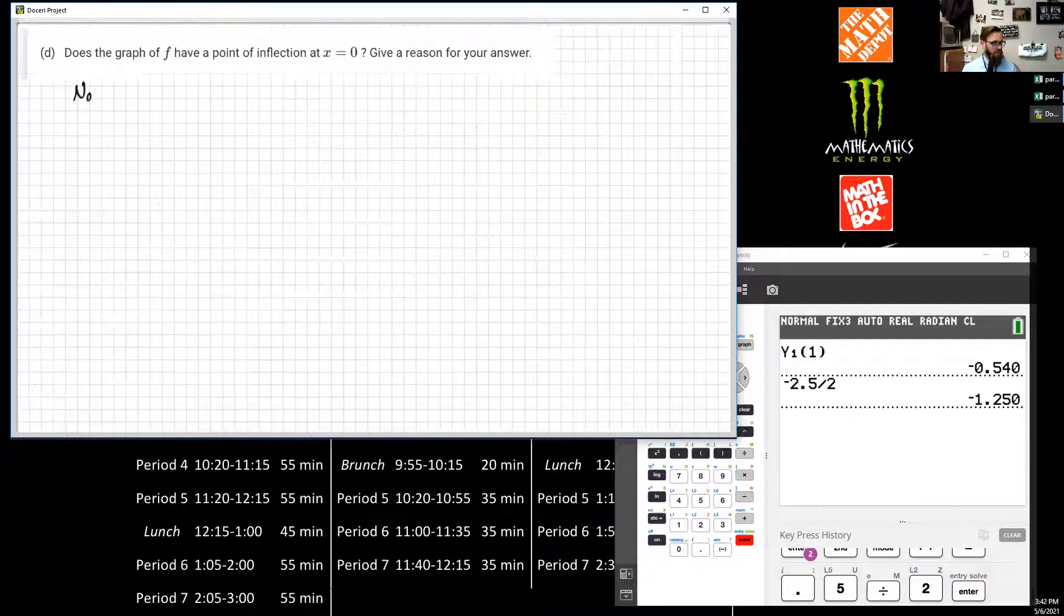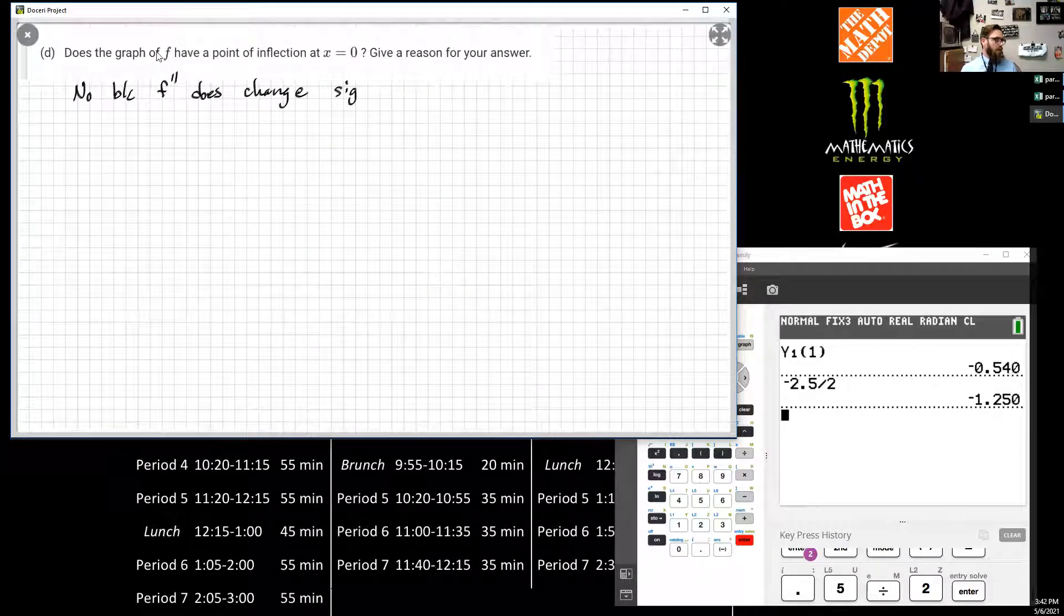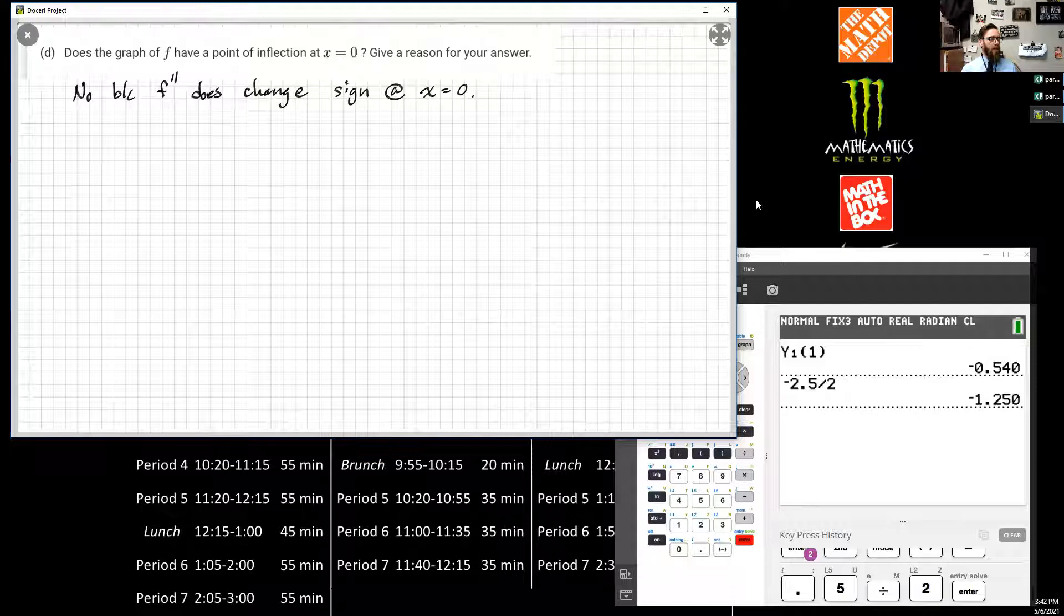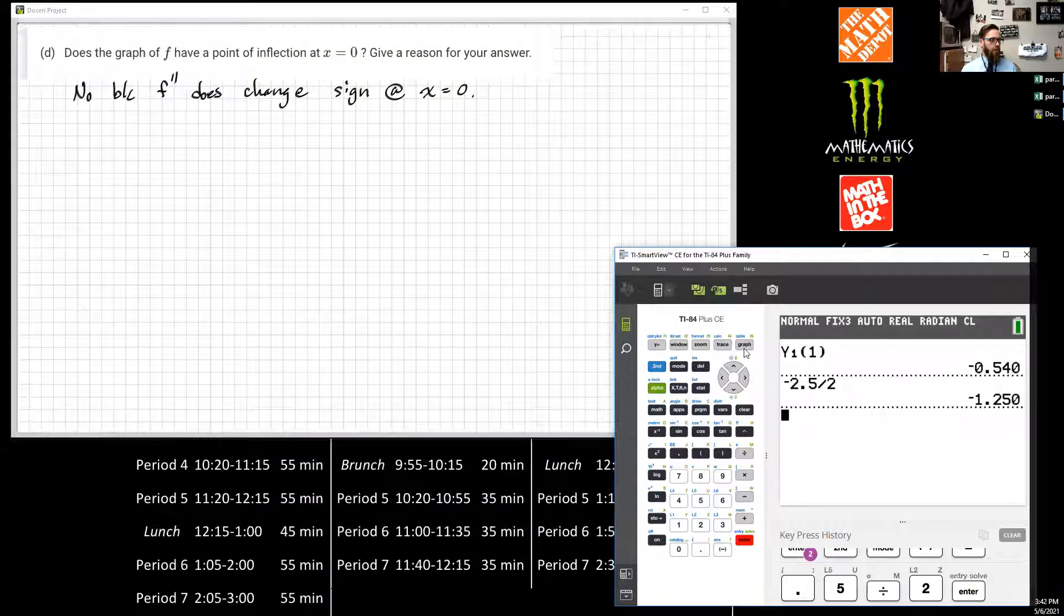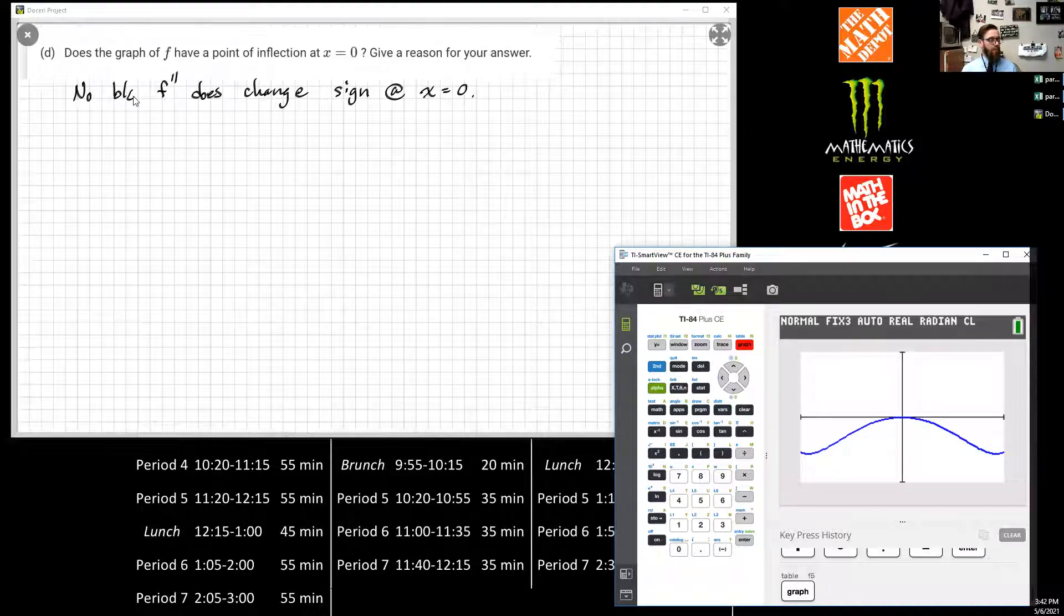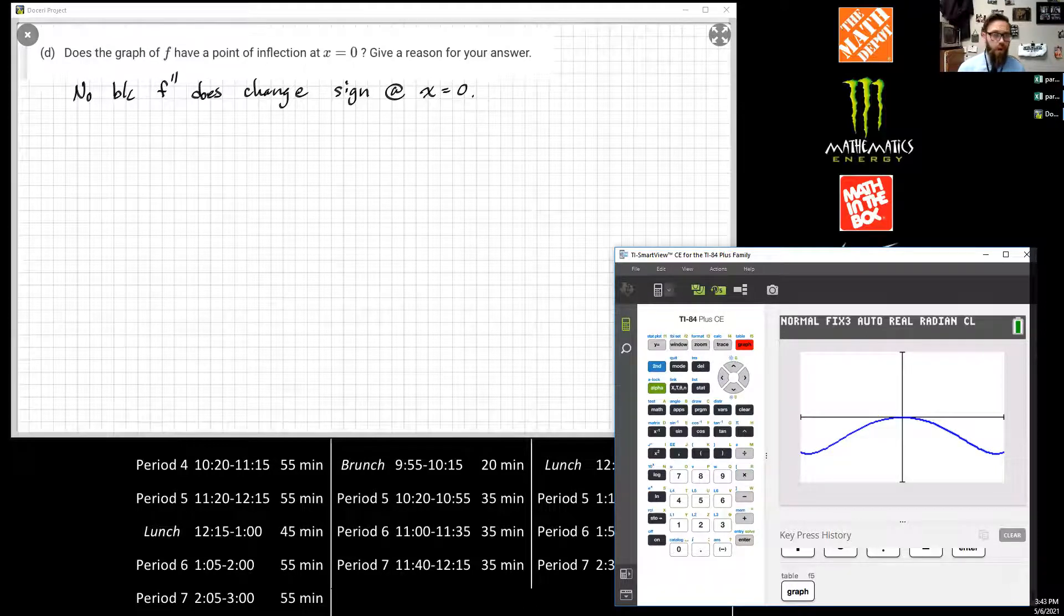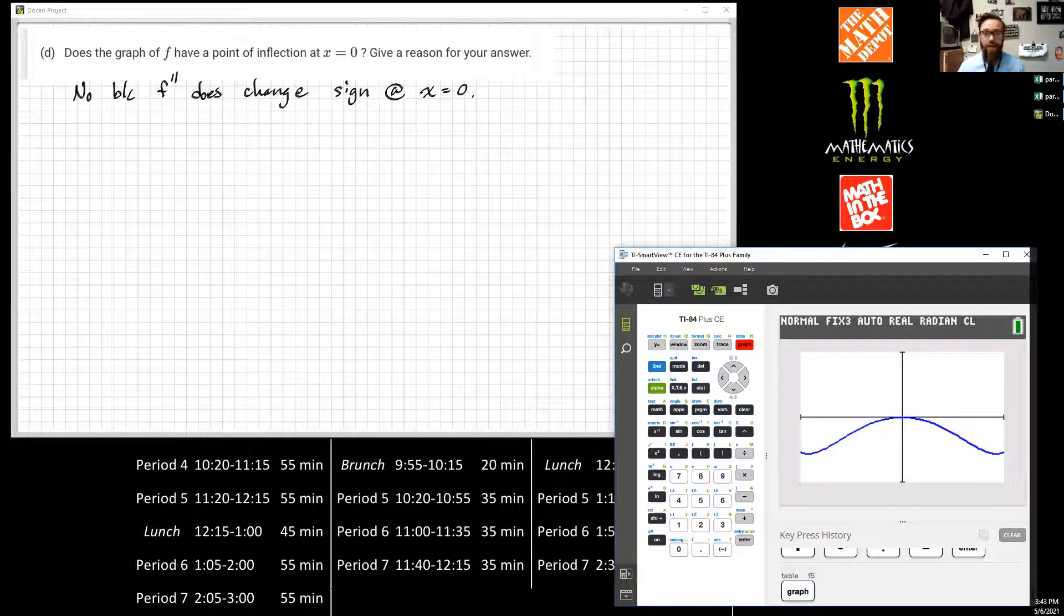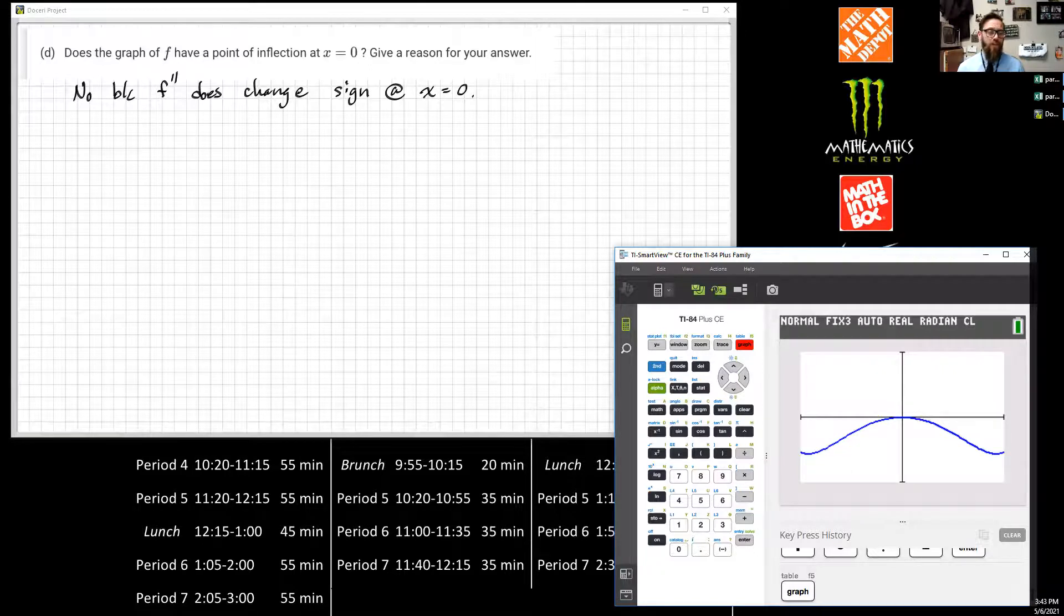The last one only asks, does the graph of F have a point of inflection at x = 0? And if we look at 0 on our graph, here's 0, the F'' stays negative on both sides. And so I can say no, because F'' does not change sign at x = 0. So you just have to know what the definition of an inflection point is. In order to have a point of inflection, the sign of F'' has to change. Otherwise, you don't have a point of inflection.